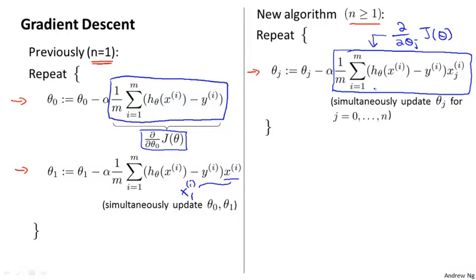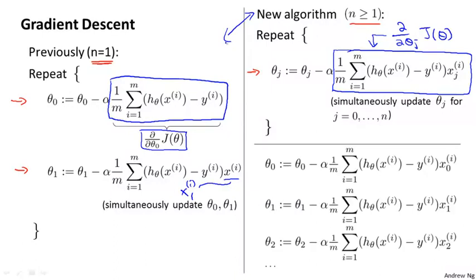The last thing I want to do on this slide is give you a sense of why these new and old algorithms are sort of the same thing, or why they're both gradient descent algorithms. Let's consider a case where we have two features, or maybe more than two features. So we have three update rules for the parameters theta 0, theta 1, theta 2, and maybe other values of theta as well.